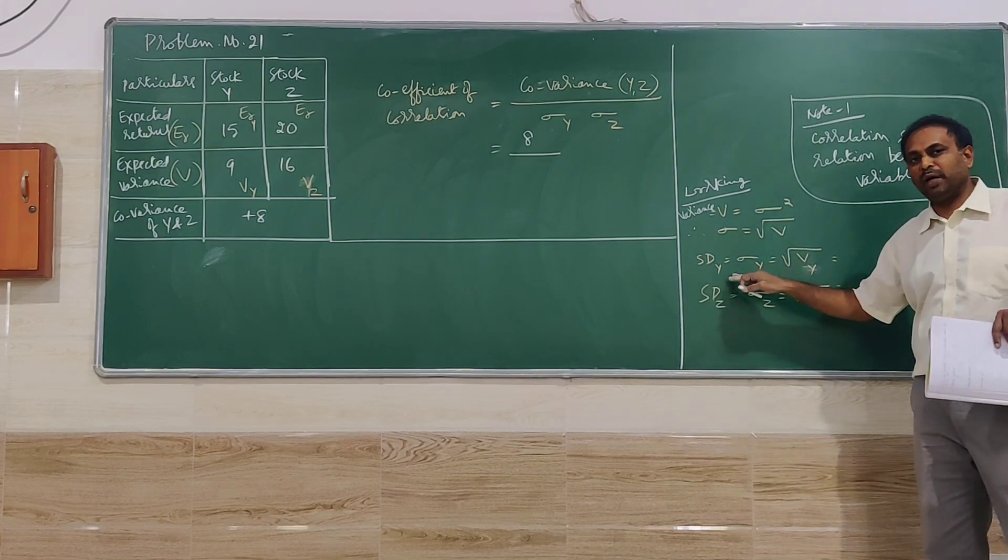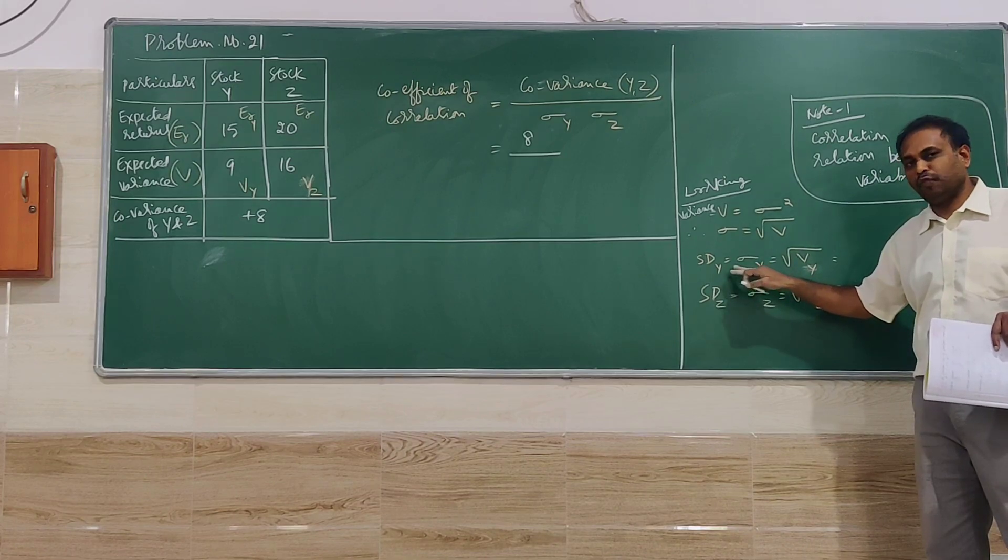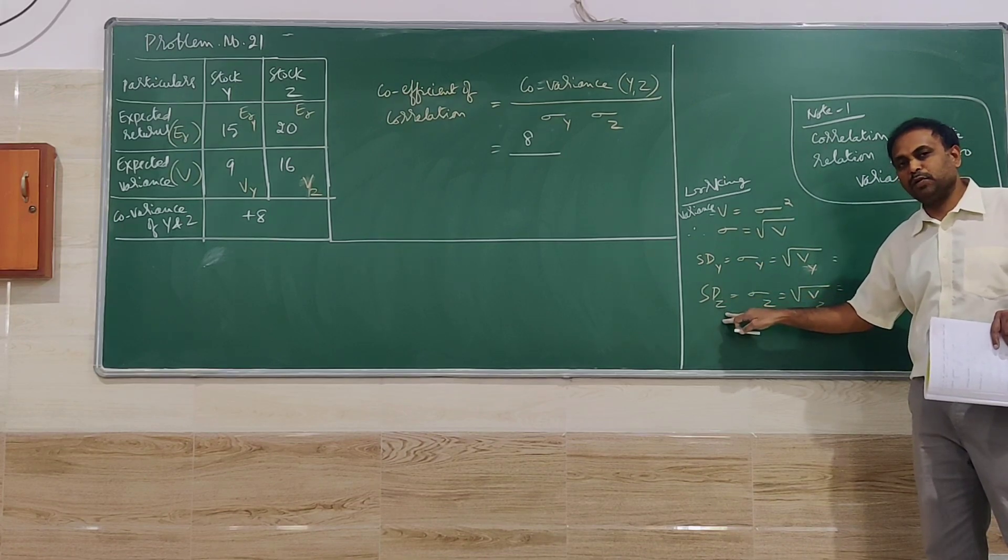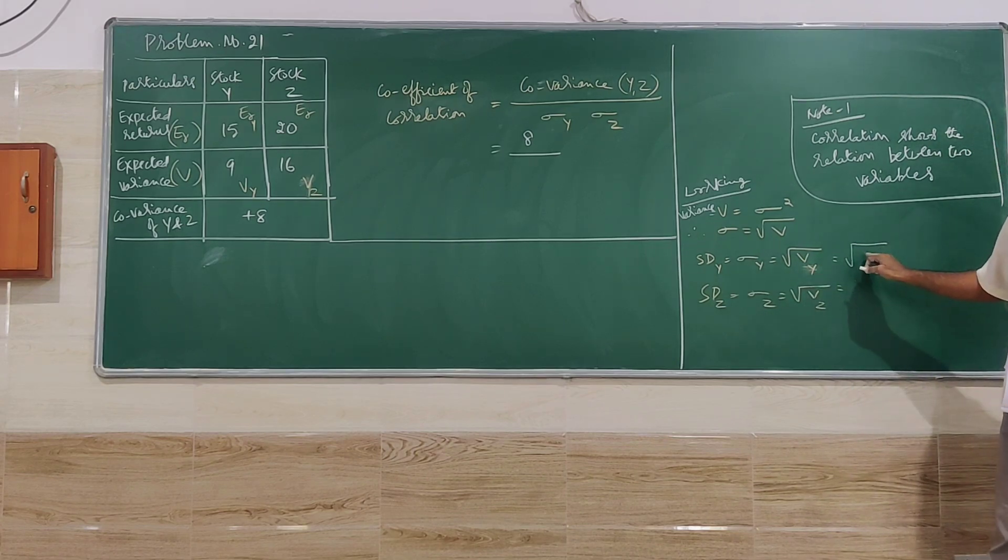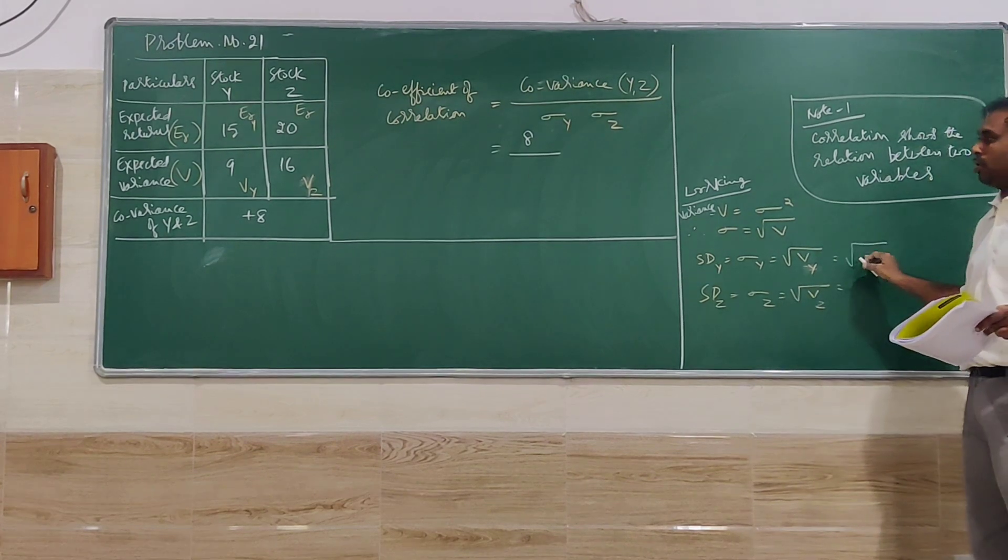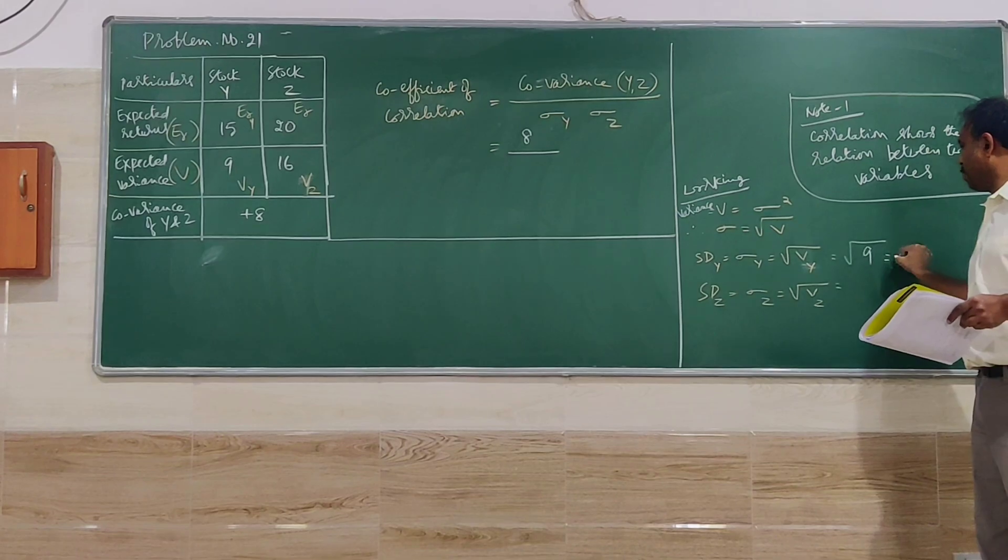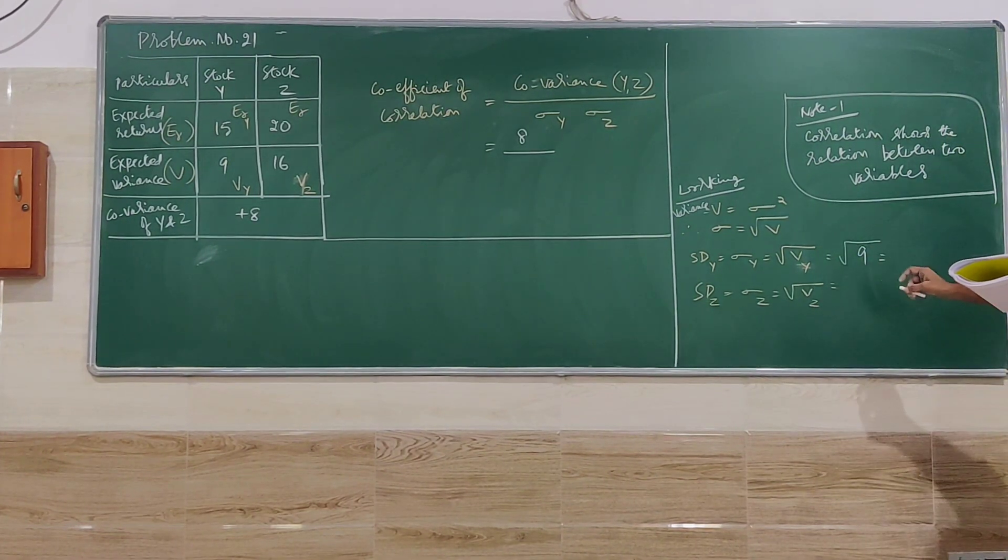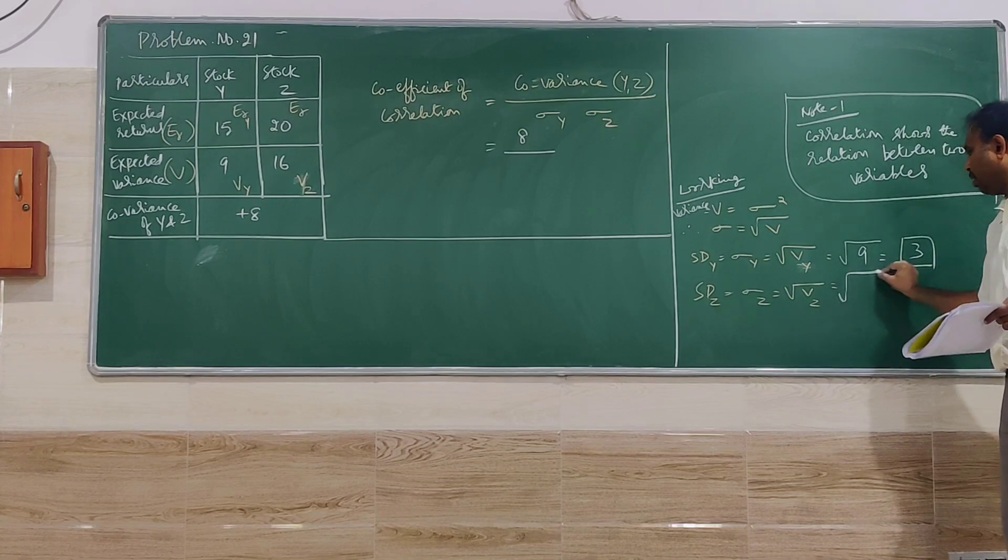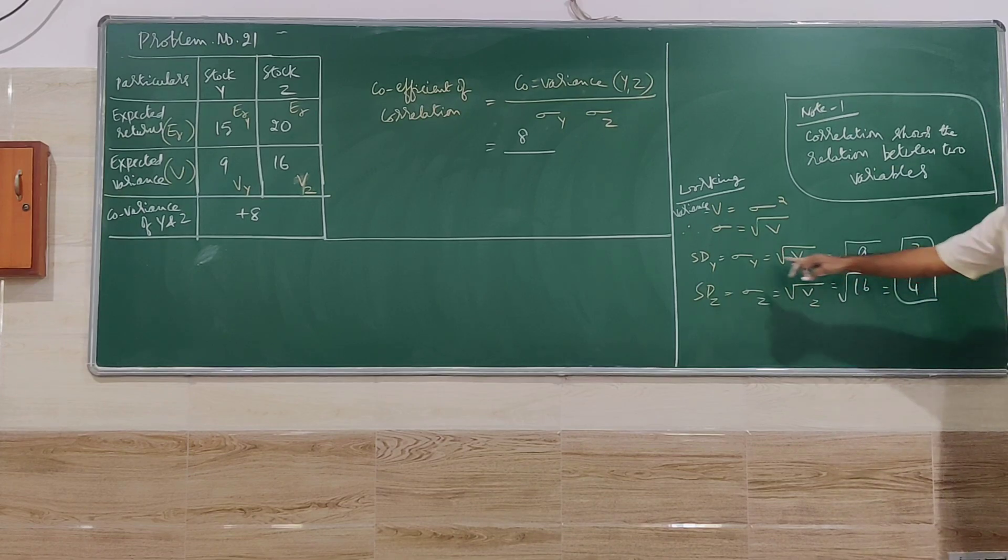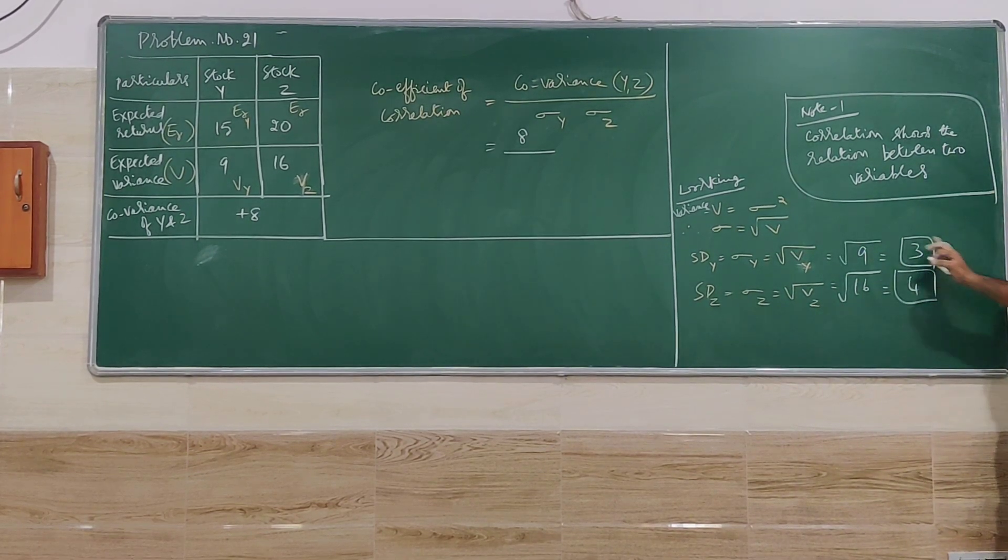So let me try to find the standard deviation of Y then standard deviation of Z. For that I have to go for square root of variance. Let me go for the square root of the first stock that is Y. So square root of 9, that is going to be 3. Next for Z, 16, that is going to be 4. So I have found standard deviation for Y, standard deviation for Z.